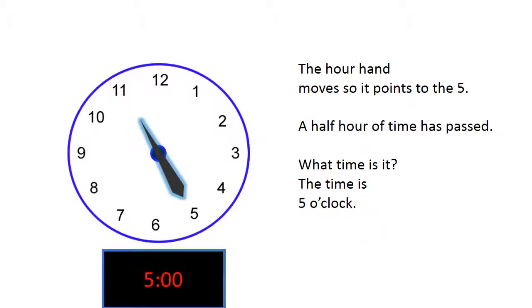The hour hand moves, so it points to the 5. A half hour of time has passed. What time is it? The time is 5 o'clock.